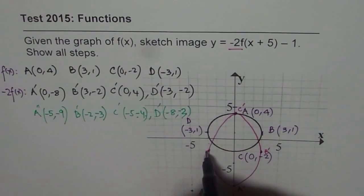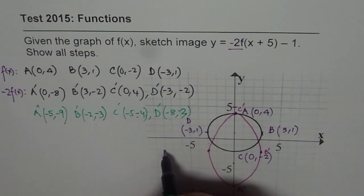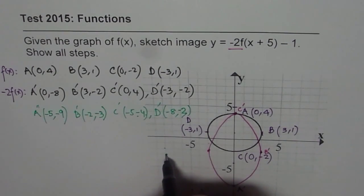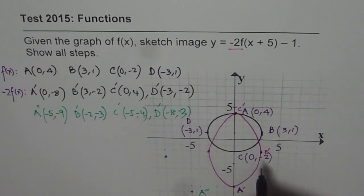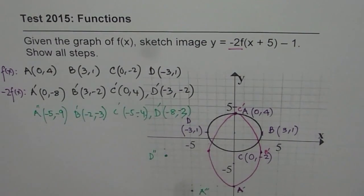Now here, this point, 1, 2, 3, 4, 5, and 1 down. So that should be the point. So this point is D double dash for us.